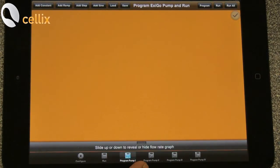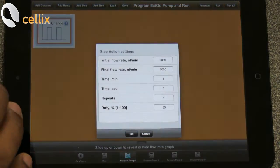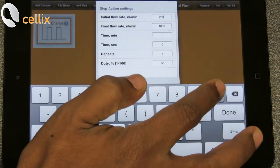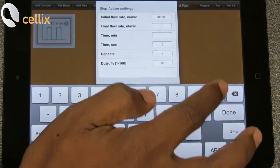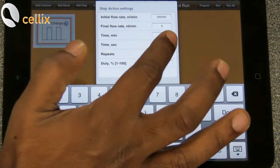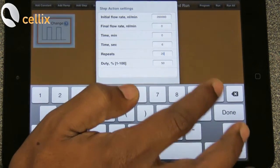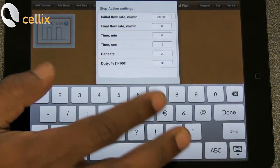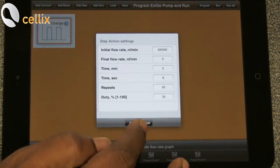So to run the pump, first we have to program the pump. To program the first pump, you click pump 1, then you go to add step. Then you have to enter the parameters. It will run at 200,000 nanoliter per minute and the next flow rate of 0, 6 seconds, 20 cycles and the duty time of 33 percentage. So the pump runs for 2 seconds and it stops for the next four. Click done, set.